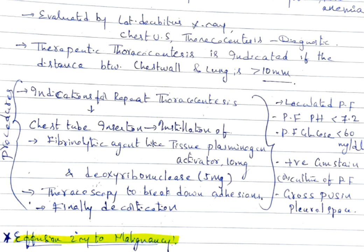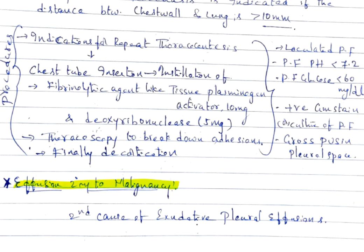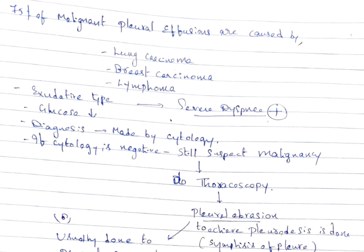Effusion secondary to malignancy is the second cause of exudative pleural effusion. 75% of malignant pleural effusions are caused by three cancers: lung carcinoma, breast carcinoma, and lymphoma. This is generally exudative type. Patient presents with severe dyspnea and glucose level will be low.